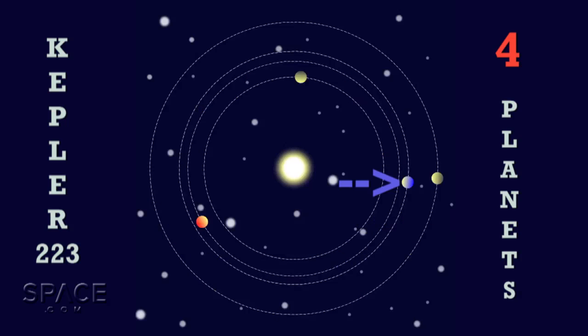And each time the third planet orbits eight times, the outermost planet orbits six times.